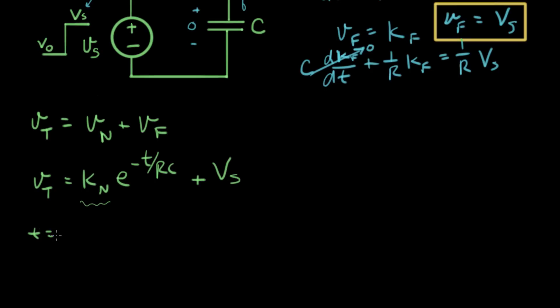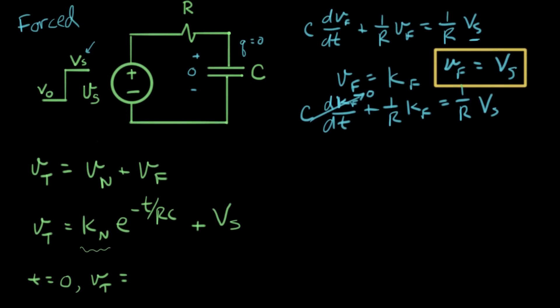And we know that V total at time equals zero is what? It's basically, let me roll it up here a little bit. Let's go backwards a little bit. Let me go back here and use this diagram again.